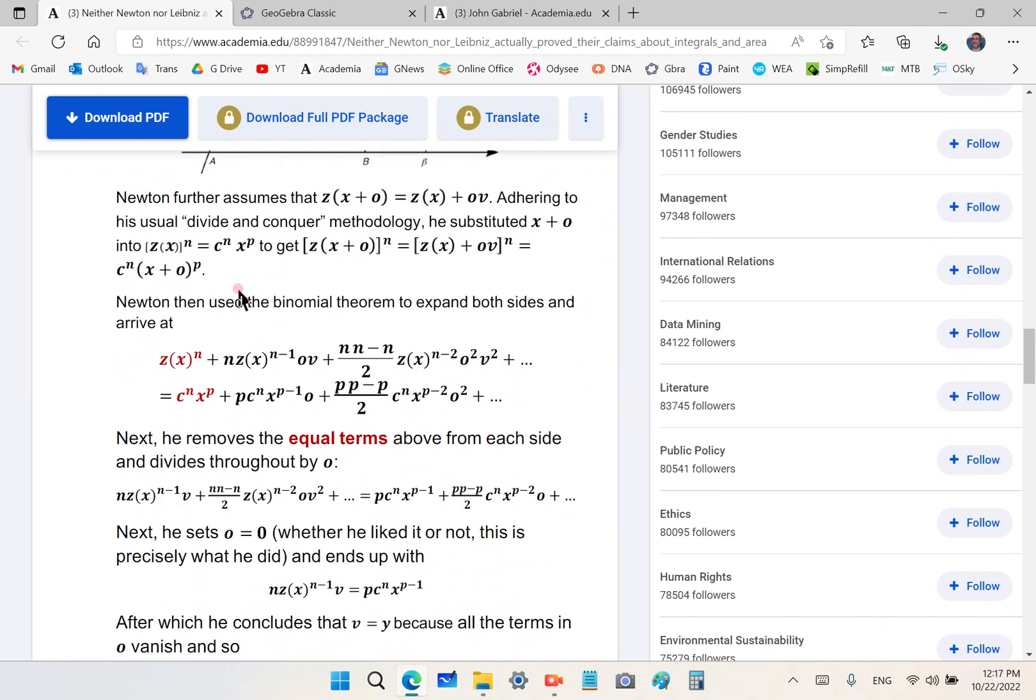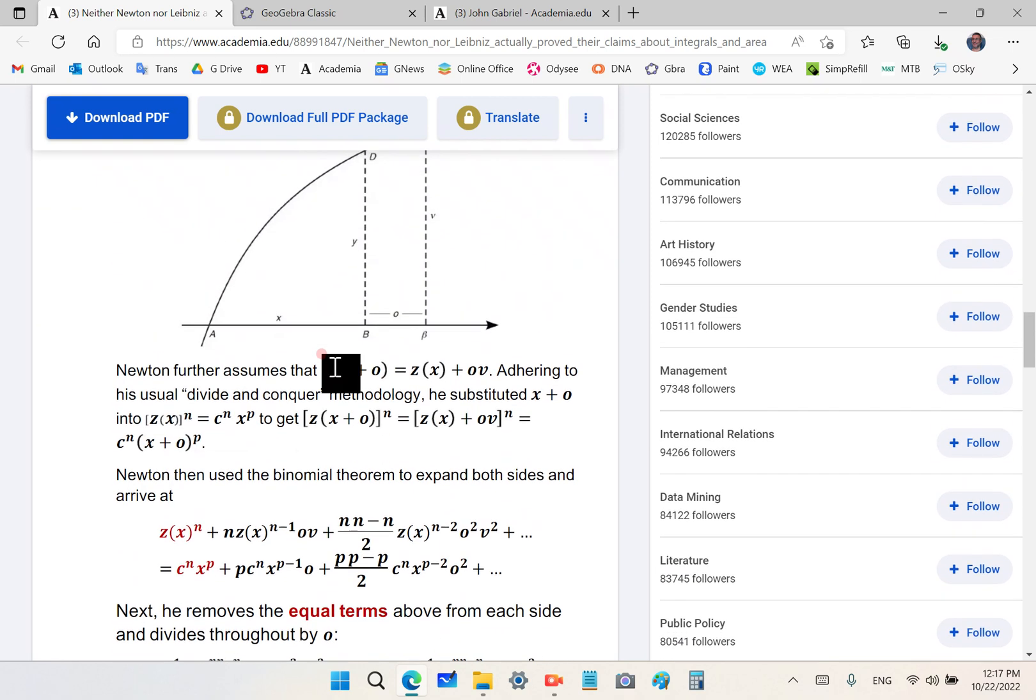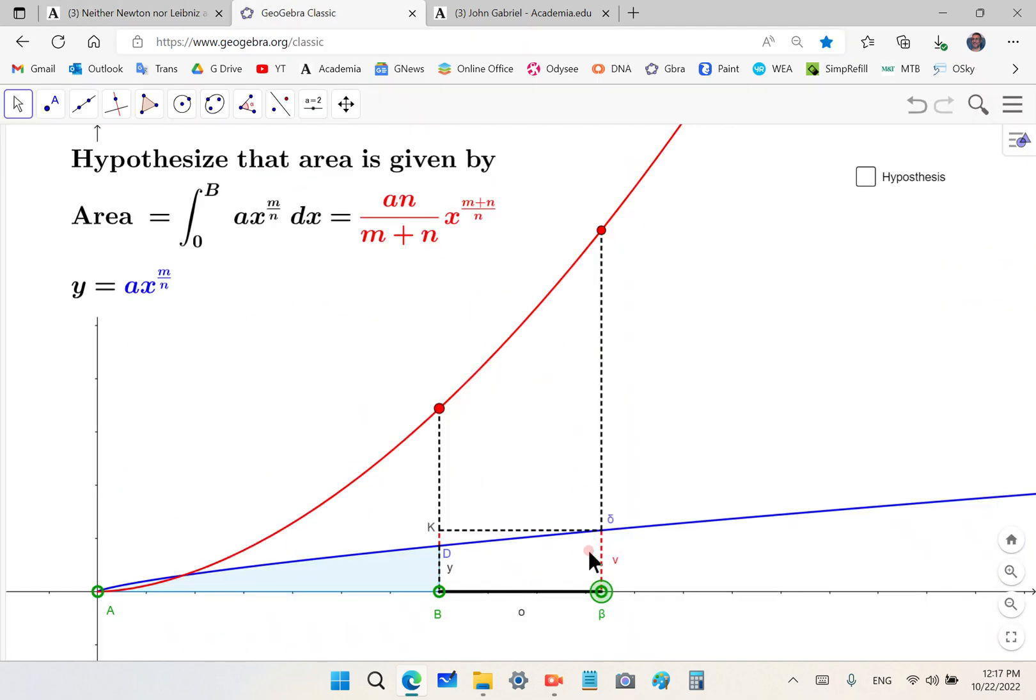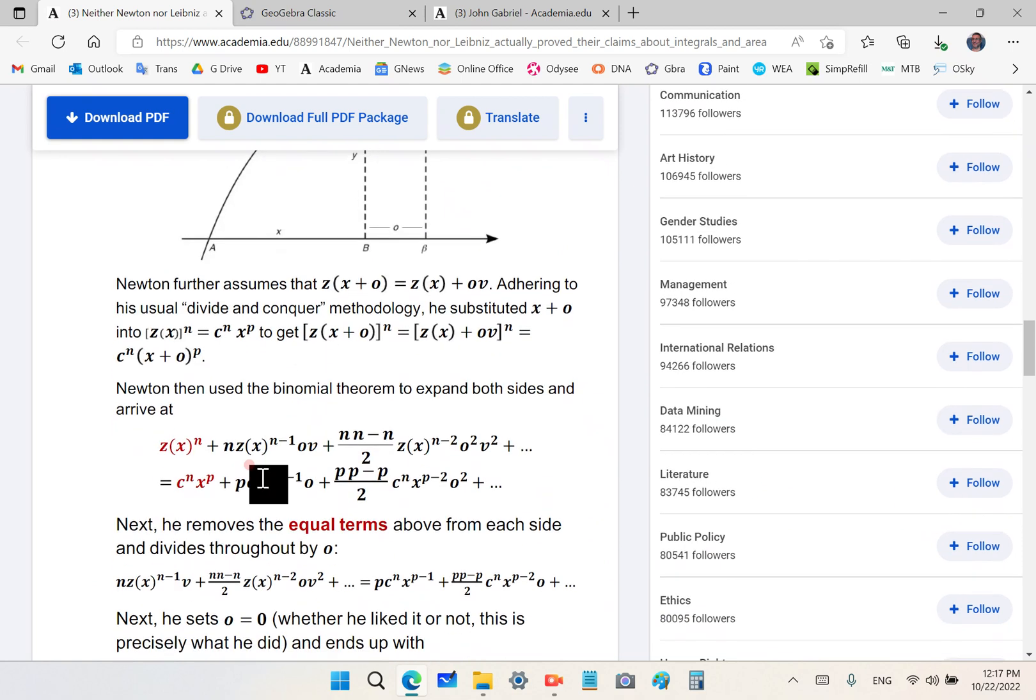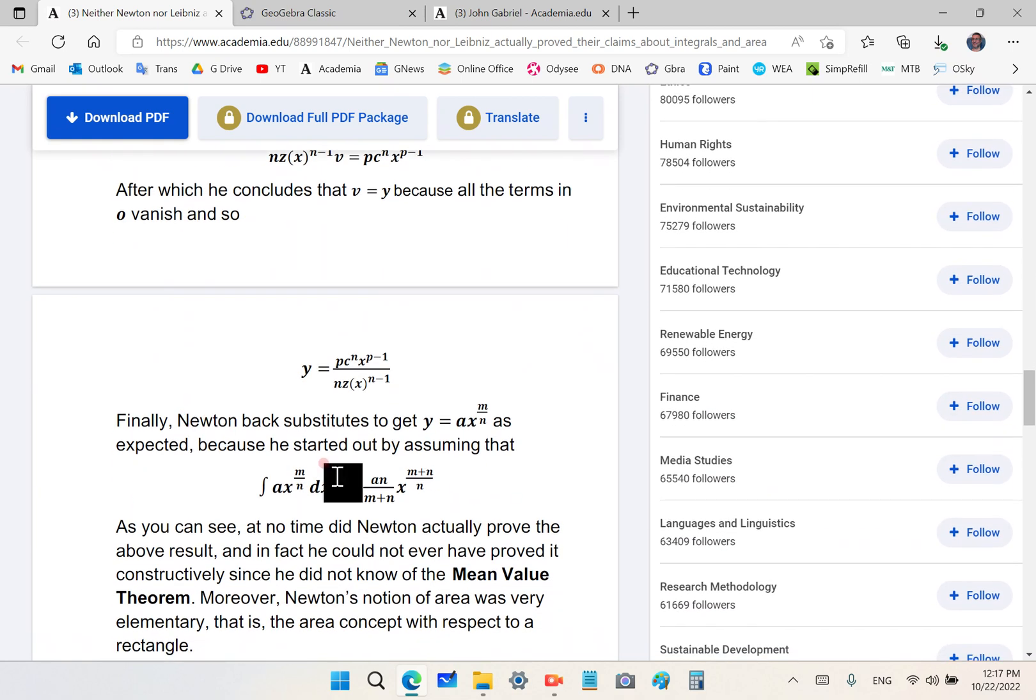Newton really, this shows you how he did it. He first of all hypothesized that Z of X plus O is equal to Z of X, which is the blue area, and that OV is the area of the rectangle. Of course he expresses OV in terms of the integral and shows that it reduces to the derivative, which is this function Y is the derivative, which is this function Y is equal to A X M over N.